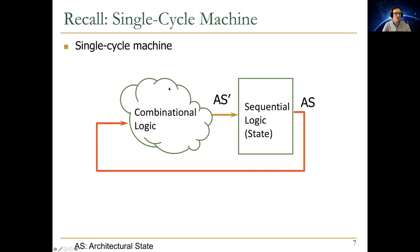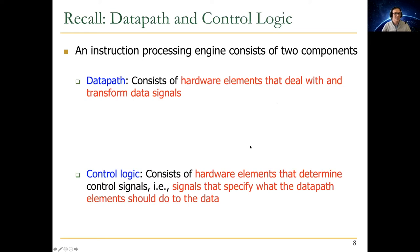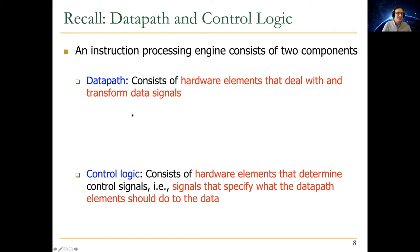Recall the representation of our single-cycle machine: there is sequential logic — the registers representing the architectural state — and combinational logic acts on it to produce architectural state prime for the next cycle. Each cycle processes one instruction. The instruction processing engine consists of two components: the single-cycle data path and the control signals. You first design the data path, then design the control logic.